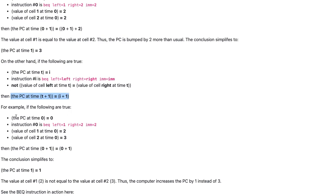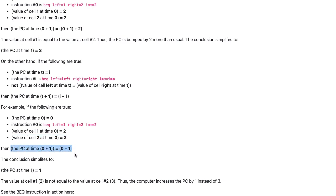For example, if the PC at time 0 is 0, and instruction 0 is BEQ left=1, right=2, and IMM=2, the value of cell 1 at time 0 is 2, and the value of cell 2 at time 0 is 3, then the PC at time 0 plus 1 is equal to 0 plus 1. The conclusion simplifies to the PC at time 1 equals 1. The value at cell 1 is not equal to the value at cell 2. Thus, the computer increases the PC by 1 instead of 3.